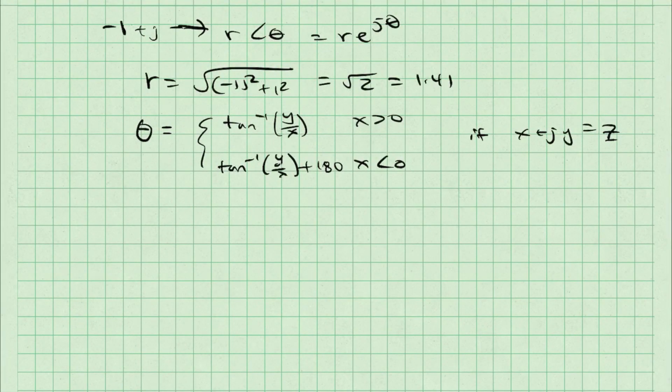As a result, b is equal to 1.41 e to the j 135, and c is just the complex conjugate of that. It's 1.41 e to the negative j 135.